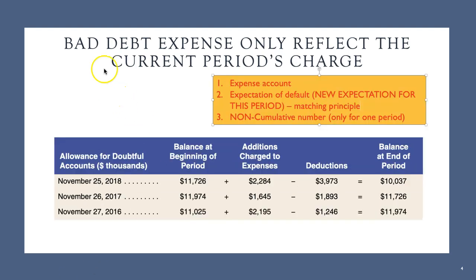To summarize: the bad debt expense is an expense account and it is the expectation of default — the same as the allowances — however, it is the newly generated expectation for the current period only, matching the revenue generated this period. Expenses are non-cumulative; they only work for one period, so next period they are reset to zero and start over again.